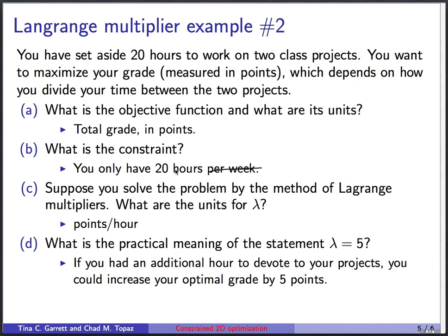So suppose you want to solve the problem by the method of Lagrange multipliers. What are the units for lambda? Well, the units are always the units of the objective function divided by the units of the constraint. Units of the objective function are points. Units of the constraint are hours. So Lagrange multiplier has units points per hour.